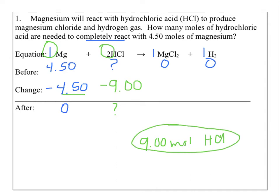Now let's fill in the rest of the chart, even though it's not part of the question. With a coefficient of 1 on magnesium chloride, hydrogen, and magnesium, all of these have the same number in the change row. But for products, we're adding — so 0 plus 4.50 is 4.50, and the same for the hydrogen. So if we had questions about magnesium chloride or hydrogen, we could certainly answer those as well.